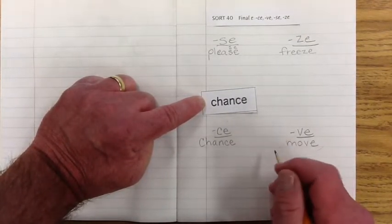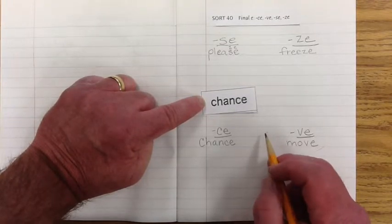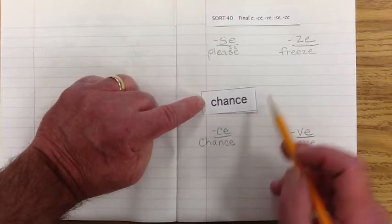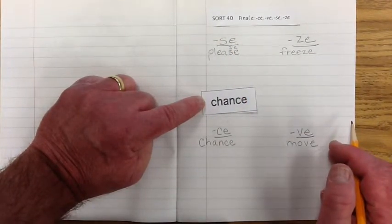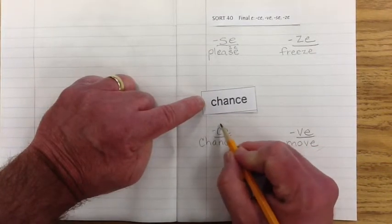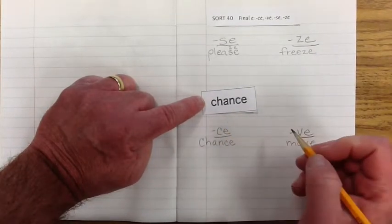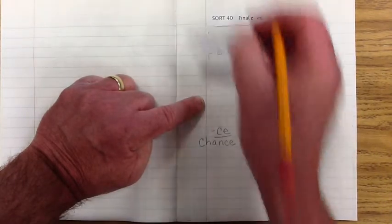What sound does it make at the end? Say it with me. Chance. Chance. There's that sound that we thought was going to be right here with an S. Chance. Okay. That's kind of a C-E, maybe an S-E. S sound. That one's kind of cool. All right.